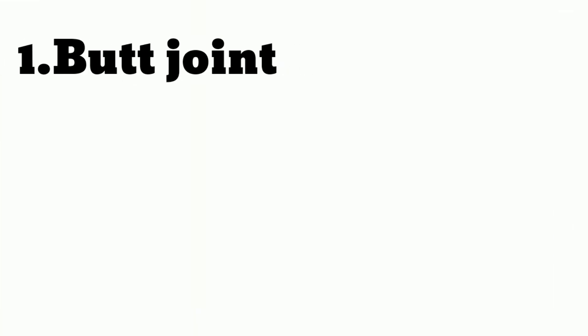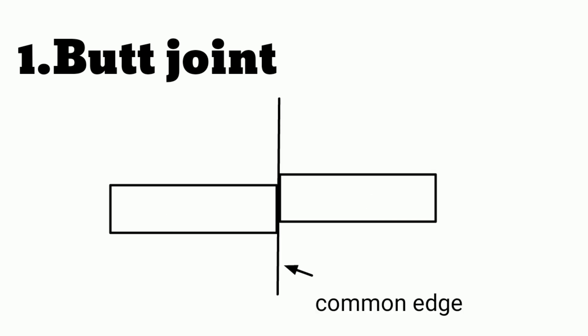So first is the butt joint. As shown in the figure, there are two parts which lie on the same plane and are joined at their common edge.